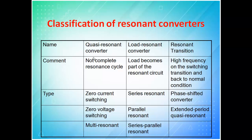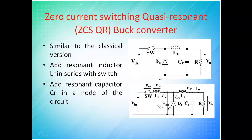In quasi resonance you have both zero current switching and zero voltage switching. Multi-resonance is possible with the help of quasi resonance. Other types like load resonance and series transition we have already seen in the last class. Now let's look at the zero current switching quasi resonance buck converter.